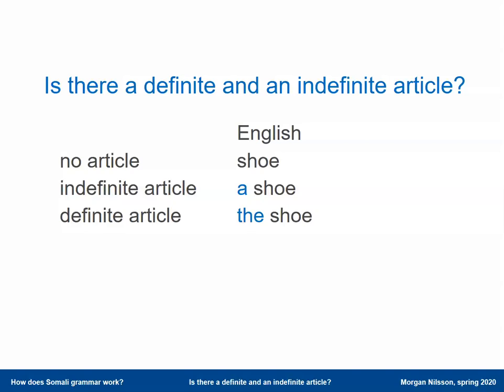So we have three different possibilities. It's also worth mentioning that we can of course also add a numeral before a noun — 'one shoe'. This is interesting for speakers of many other European languages, like Swedish, German, French, and so on, because in a number of languages the indefinite article and the numeral are homonymous. So in Swedish, both the indefinite article and the numeral is 'en'.